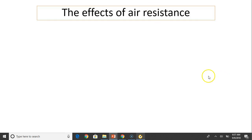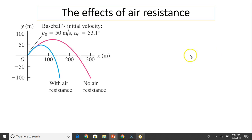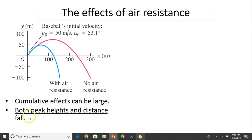Now let's talk about the effect of air resistance. Here is the baseball's ideal trajectory with no air resistance. This blue one is with air resistance. As you can see, cumulative effects can be large. Both the peak height and the distance traveled will decrease. The blue path is not parabolic anymore.